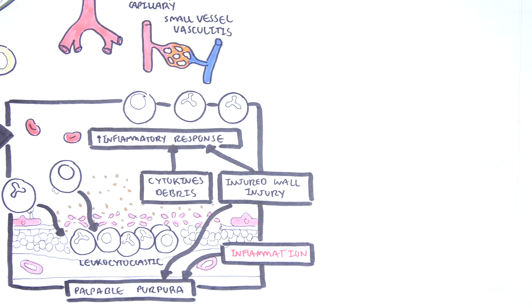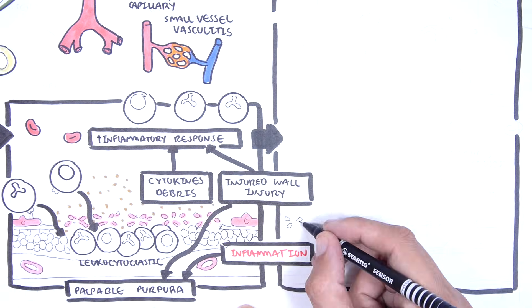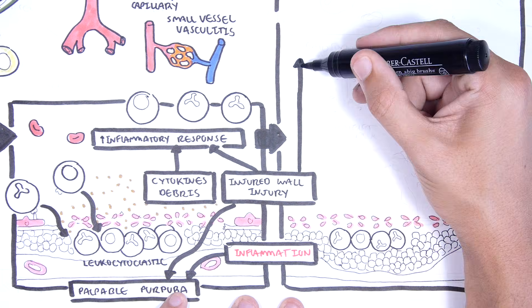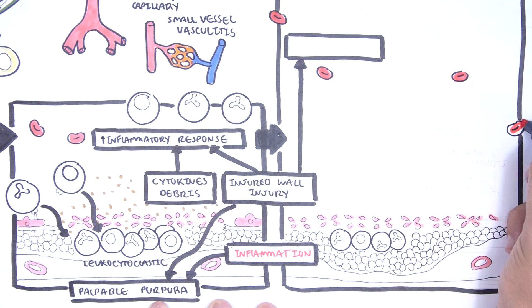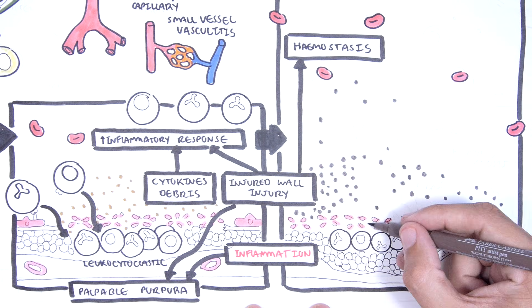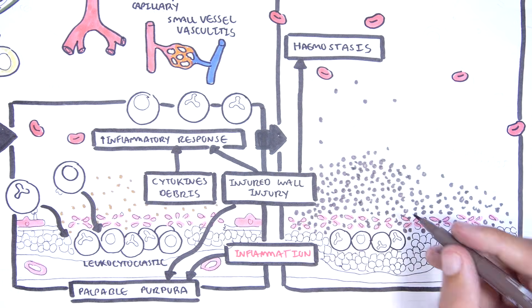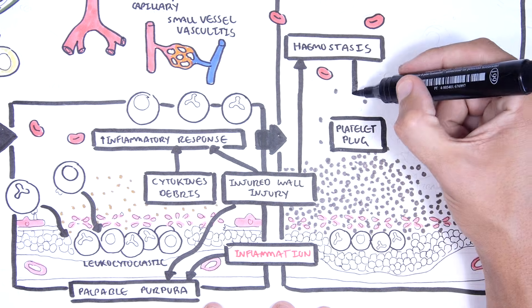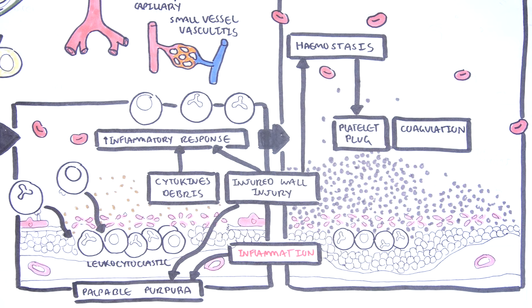When there is vessel wall injury, the body's mechanism is to repair the blood vessel. This is done through hemostasis. Hemostasis involves vasoconstriction to reduce blood flow to the damaged area, platelet plug formation to form a temporary plug, and coagulation to form the fibrin mesh.